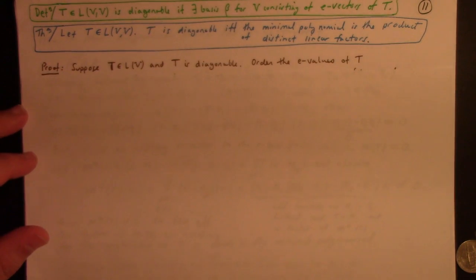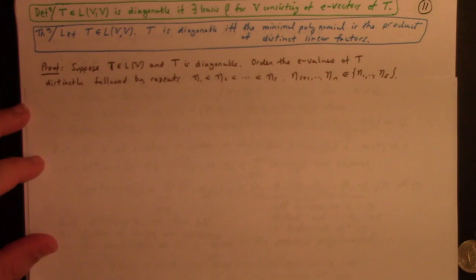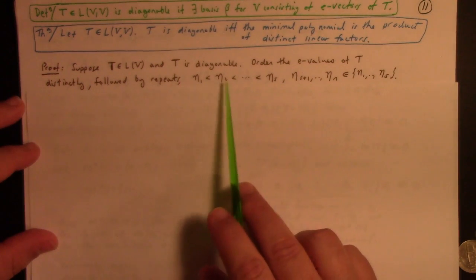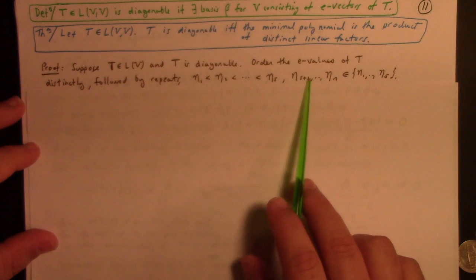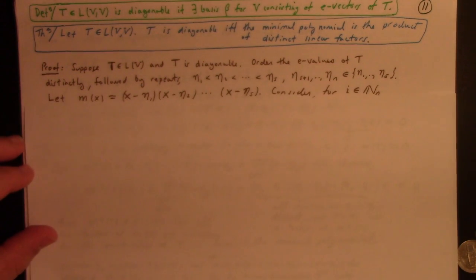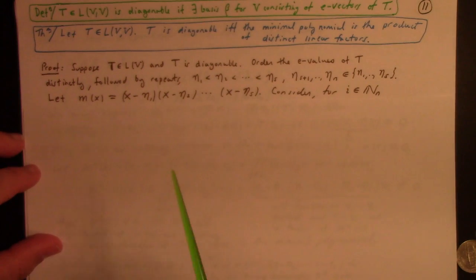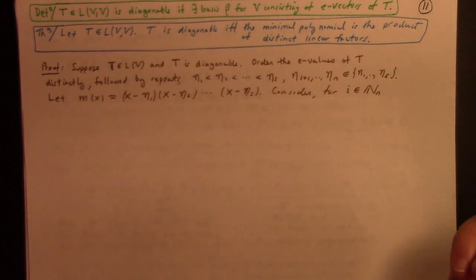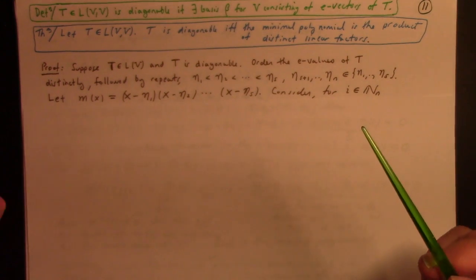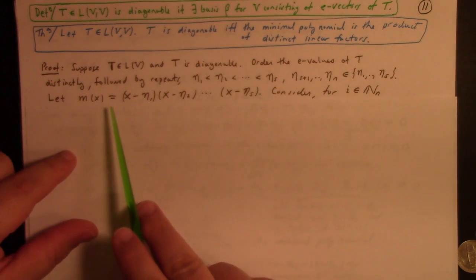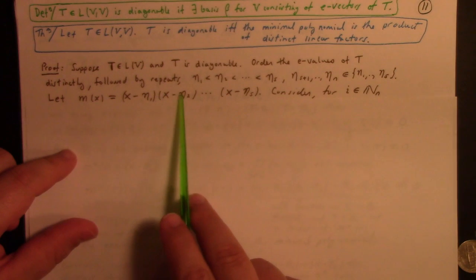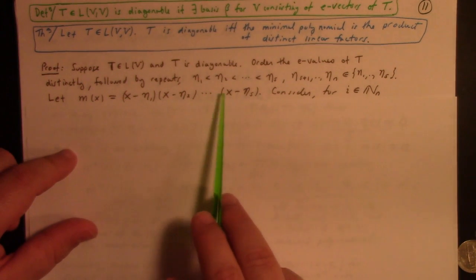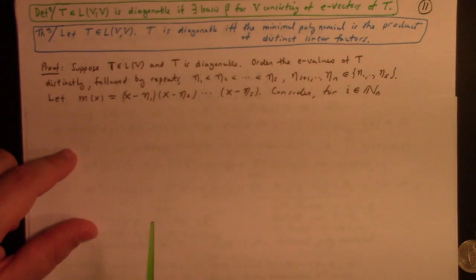First of all, suppose it's diagonalizable. Order the eigenvalues of T distinctly followed by repeats. In other words, let the first S of them be distinct and then let the rest of them possibly repeat. Then the minimal polynomial, well, I don't know it's the minimal polynomial yet. I'm hoping to prove, in fact, it is.